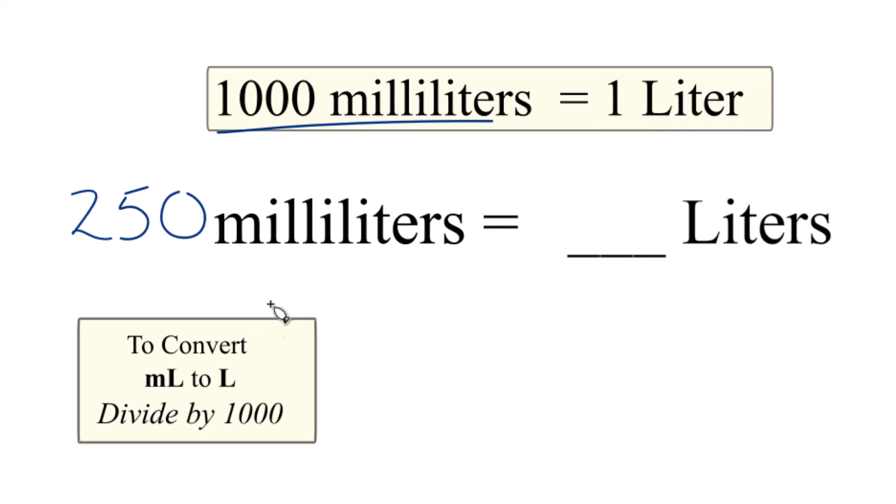The way to do it is when you're converting from milliliters to liters, you divide by a thousand. So 250 divided by a thousand, that would give you 0.25.